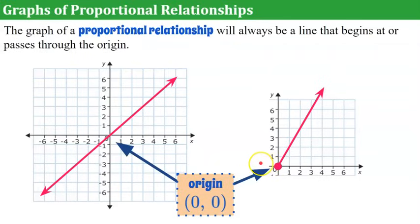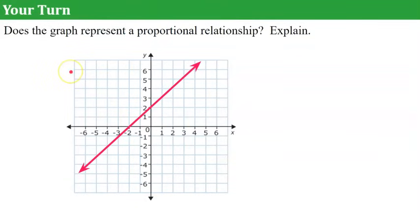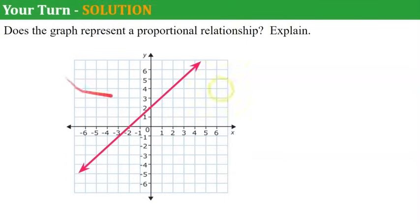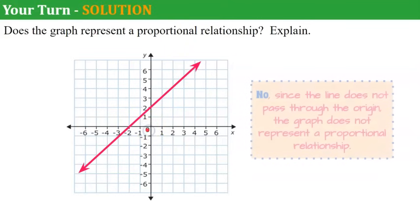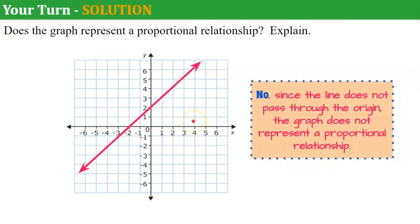We know these graphs represent a proportional relationship because each line passes through or begins at the origin — that must be true. Now think about this: does the next graph represent a proportional relationship? Go ahead and pause. Welcome back. We look at the origin point (0, 0) and the line does not pass through it. Since the line does not pass through the origin, the graph does not represent a proportional relationship.